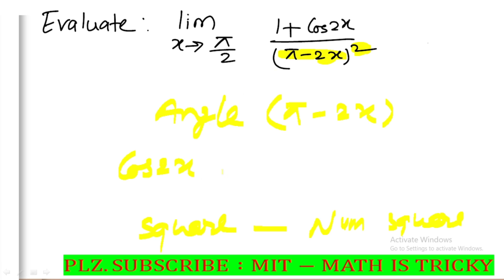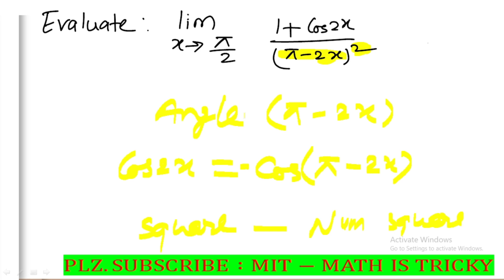What is cos 2? We apply cos(π minus 2x). So cos(π minus 2x) equals minus cos(2x). We will be minus this. Then we change the angle — the squared form applies here.